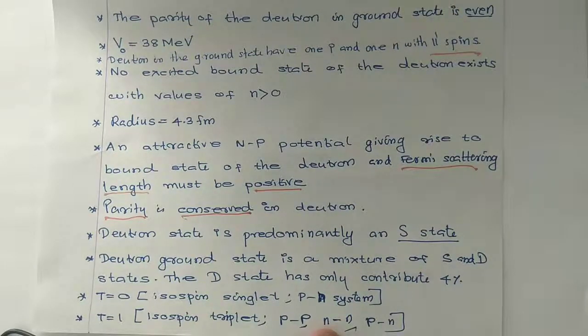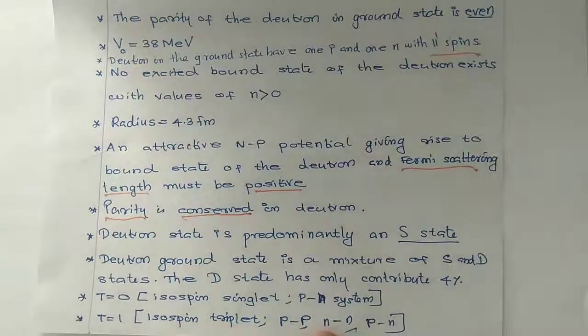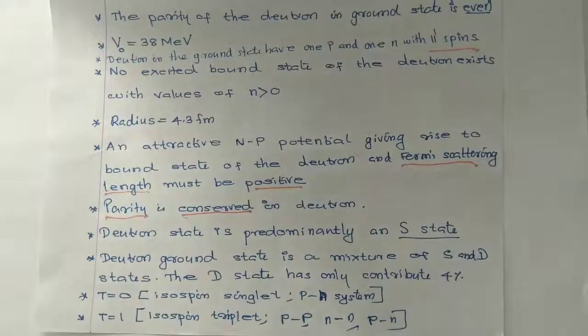The deutron ground state is a mixture of S and D states. The D state contributes only 4%. When D is equal to zero, it is an isospin singlet (PN). When D is equal to 1, it is an isospin triplet.